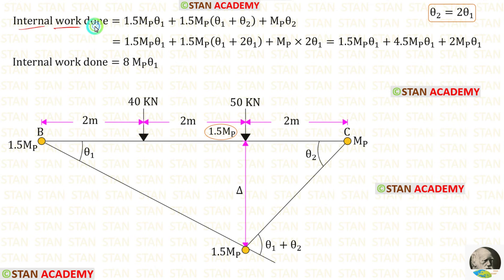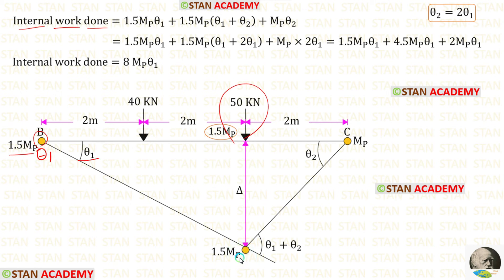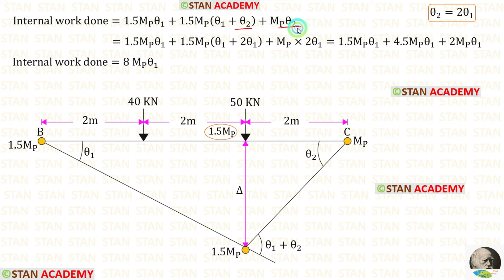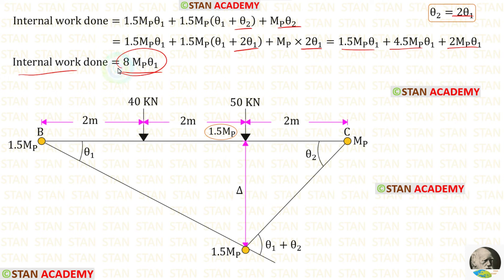Now let us find the internal work done. At point B we have a plastic hinge; we multiply 1.5 MB with angle theta 1. Under the load 50 kN we have a plastic hinge; we multiply 1.5 MB with angle (theta 1 + theta 2). At point C we have a plastic hinge; we multiply 1.5 MB with angle theta 2. Substituting theta 2 = 2 theta 1 and adding all three terms, the internal work done equals 8 MB theta 1.